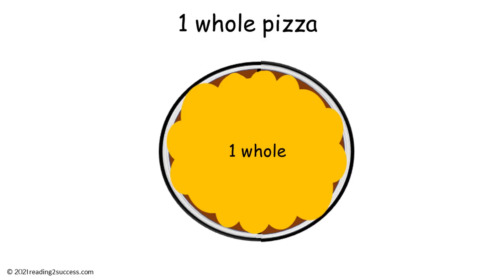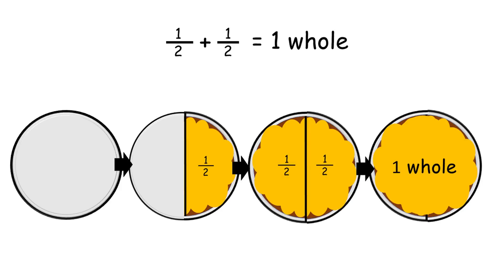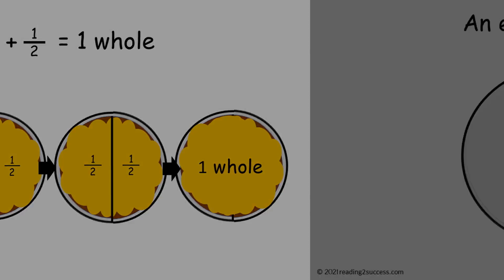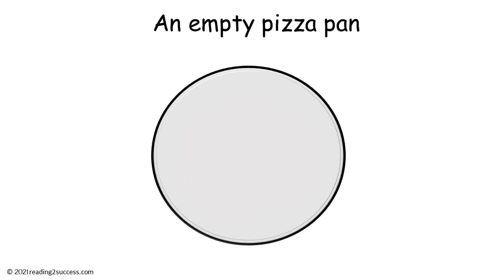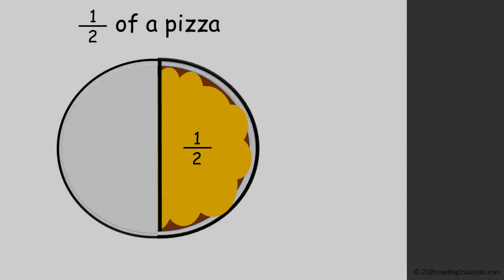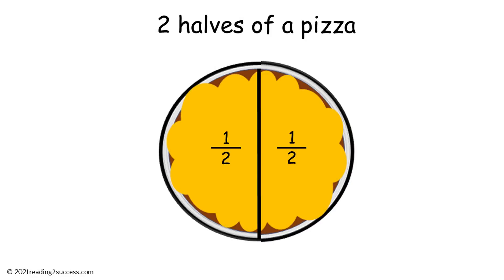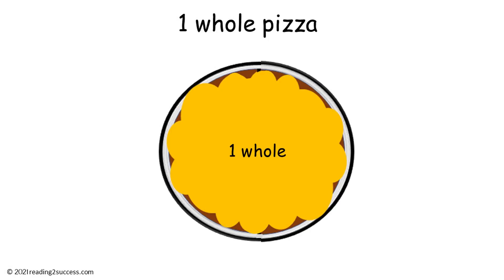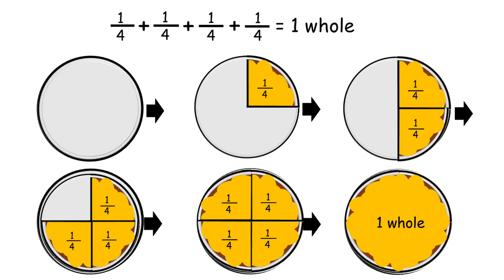Before we move to the next activity, we are going to use a pictorial of a pizza representing halves, fourths, and eighths, so kids gain a stronger understanding of what fractions represent. We begin with halves, from an empty pan to a whole pizza: an empty pizza pan, one half of a pizza, two halves of a pizza — equals one whole pizza.